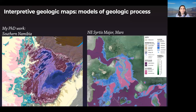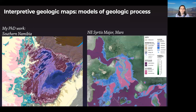During my PhD, I did geologic mapping in two very different areas. One was Southern Namibia, where the input data was really on-the-ground work — marching up and down a plateau and collecting bedding orientations, assembling a geologic map the old fashioned way. The other was working in Northeast Syrtis Major on Mars, working down from orbit and trying to assemble the same information about geologic history of an area from an orbital vantage point, which is in some ways a much tougher problem.